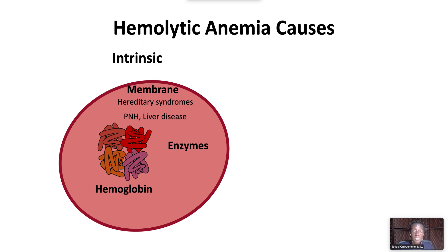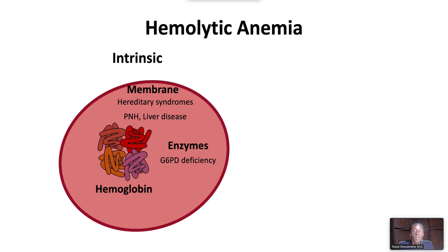Inherited enzyme deficiencies include glucose-6-phosphate dehydrogenase deficiency and pyruvate kinase deficiency. Hereditary defects in hemoglobin include hemoglobinopathies such as sickle cell disease, and the thalassemias, including beta-thalassemia.